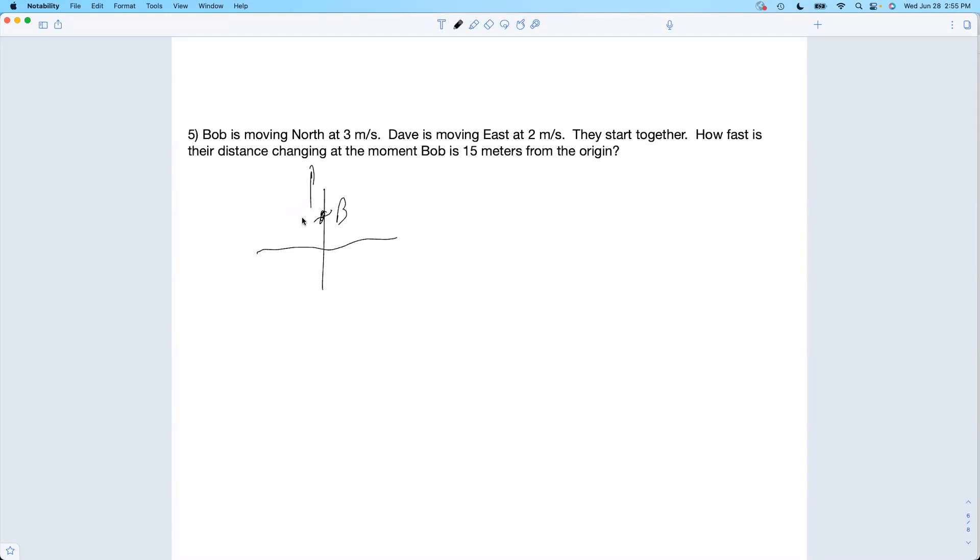So maybe we'll call this distance here Bob's distance from the origin y, that would make sense. Then dy/dt, how quickly his y is changing, is three meters per second. And at that time Dave is over here somewhere and he's moving east.